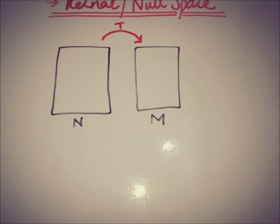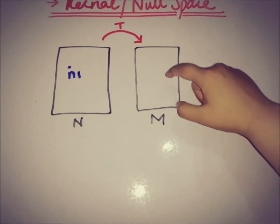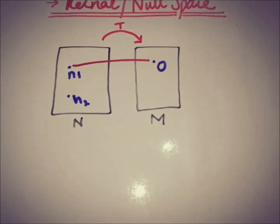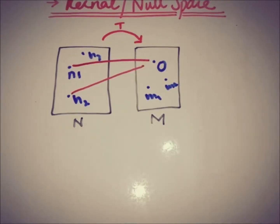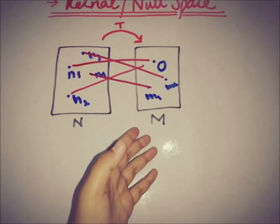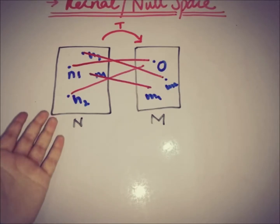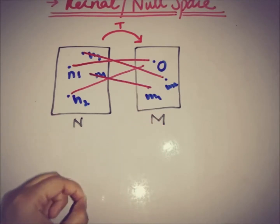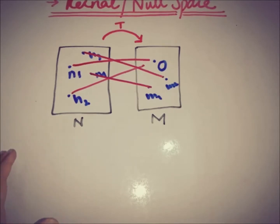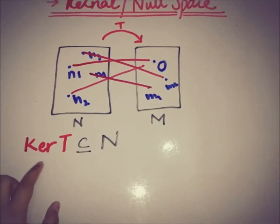If I am taking an element from space N, say n1, T maps that element n1 to the zero element of M. Similarly, T maps n2 to the zero element of M. But n3 maps to some element m1 of M. So some elements of N are mapped to the zero element of M, and some are mapped to other elements of M. The set of those elements of N which are mapped onto the zero element of M is a subspace of N.